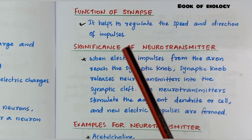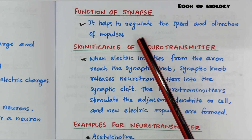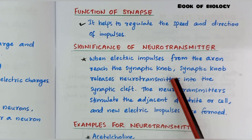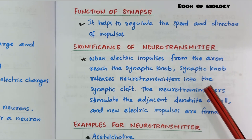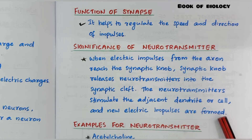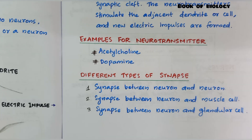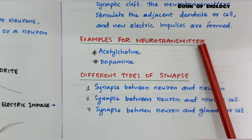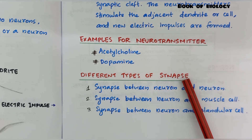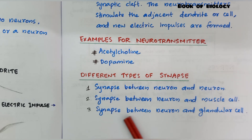Function of synapse: it helps to regulate the speed and direction of impulses. Significance of neurotransmitter: when an electric impulse from the axon reaches the synaptic knob, the synaptic knob releases neurotransmitters into the synaptic cleft. The neurotransmitters stimulate the adjacent dendrite or cell, and new electric impulses are formed. Examples of neurotransmitters: acetylcholine and dopamine. Types of synapse: synapse between neuron and neuron, synapse between neuron and muscle cell, and synapse between neuron and glandular cell.